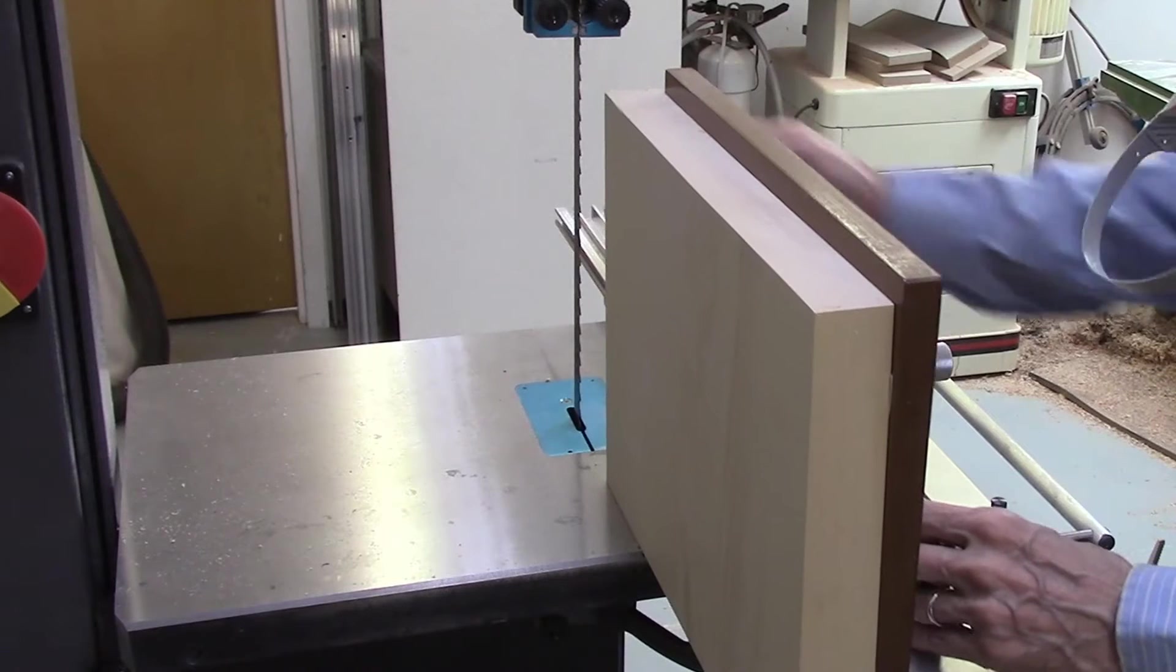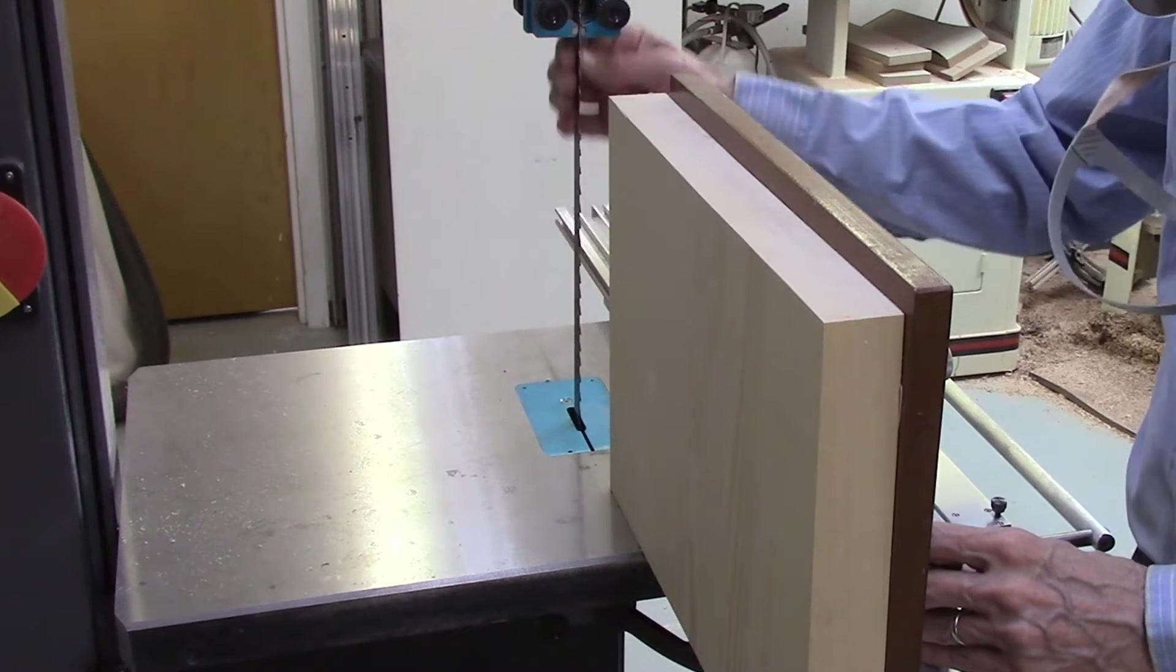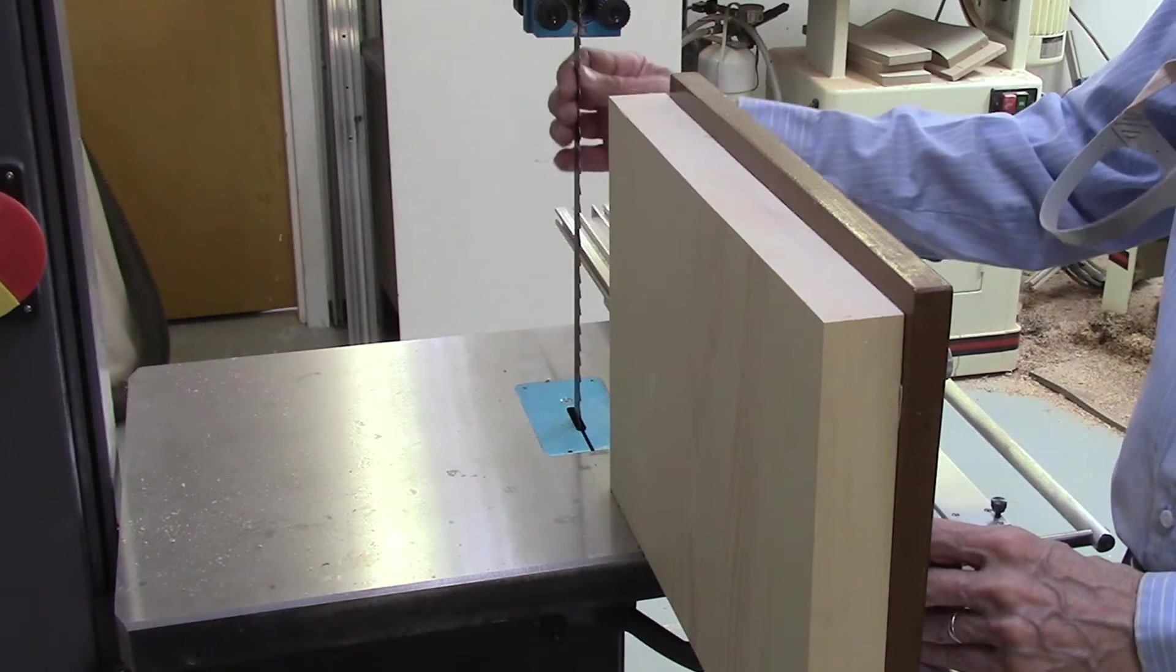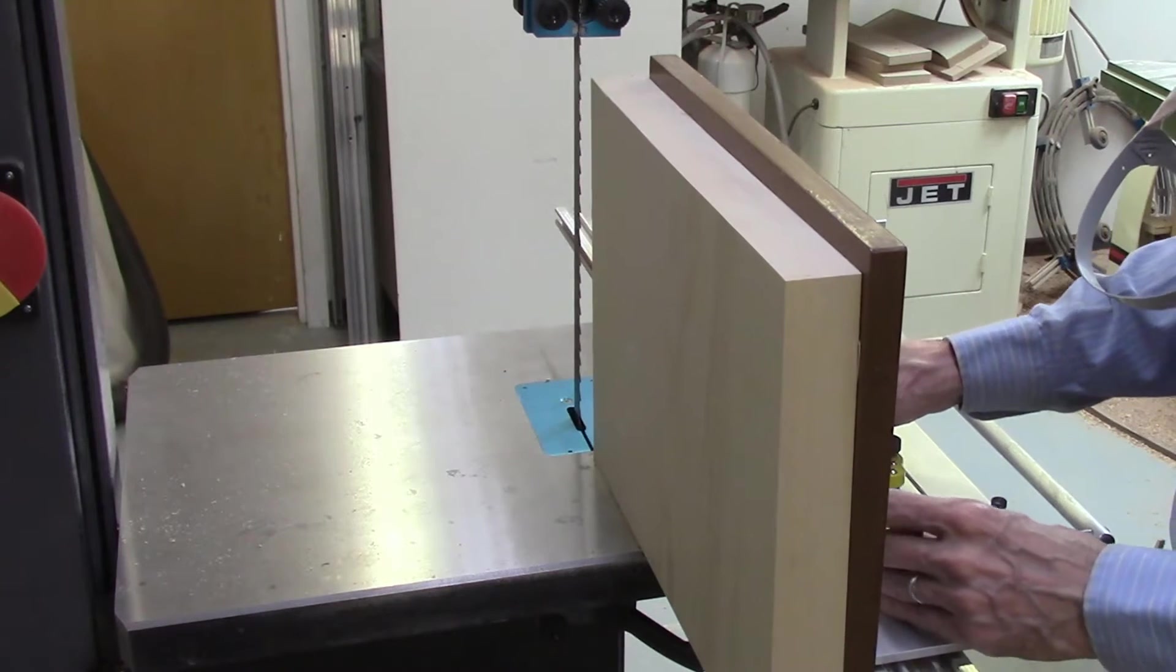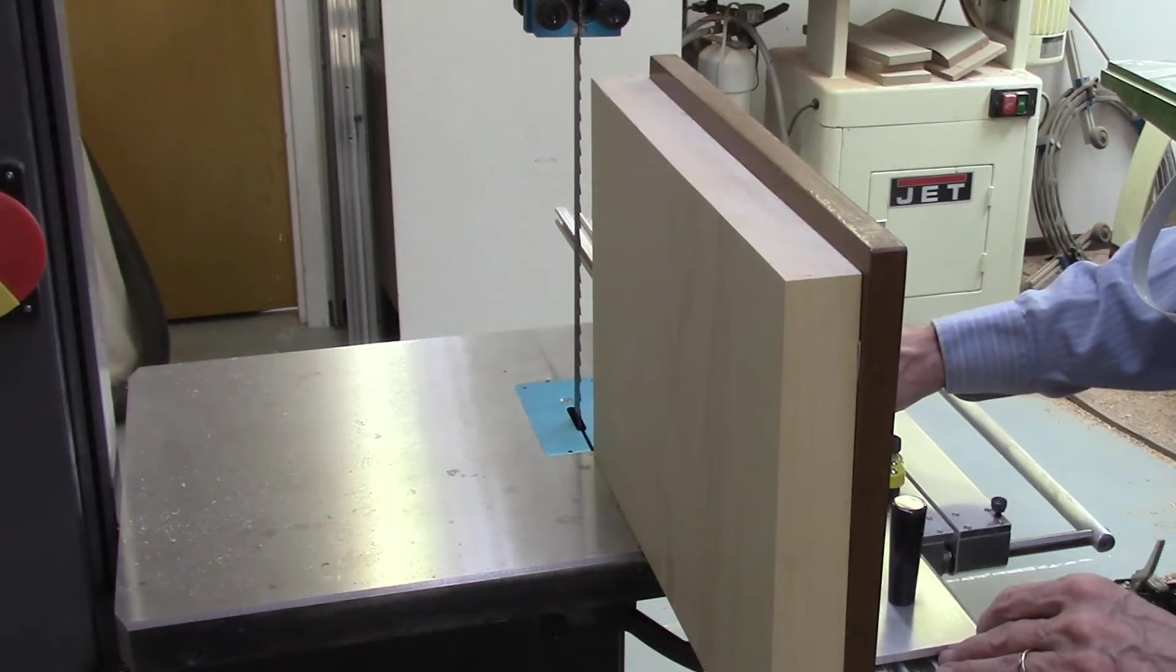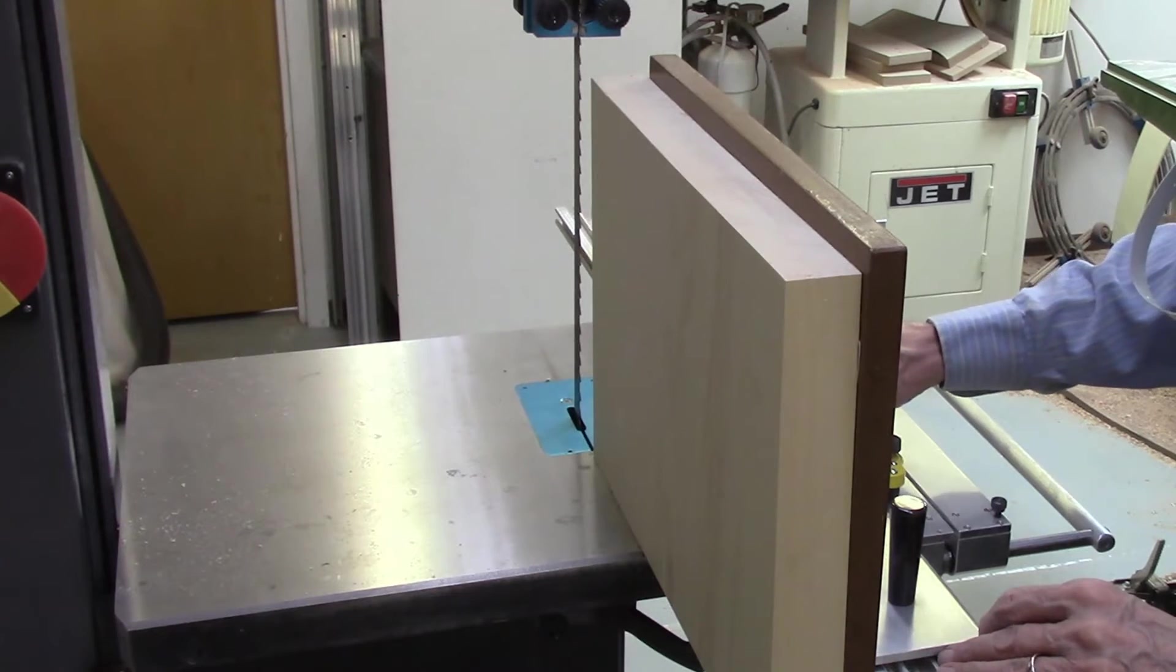So I just replaced the blade with one of those carbide tooth blades. I think this is a Laguna blade. It's about three teeth per inch. We'll see how it works and we'll compare it to the finer rig tooth, eight teeth per inch blade.